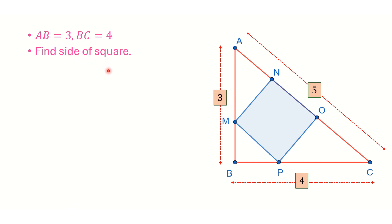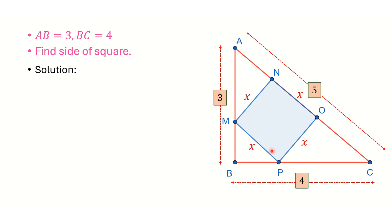I will use the idea of similarity to solve this problem. Since this is a square, all 4 sides are equal — let us call this side length x. So all other sides are also equal to x, and all angles of the square are 90 degrees.